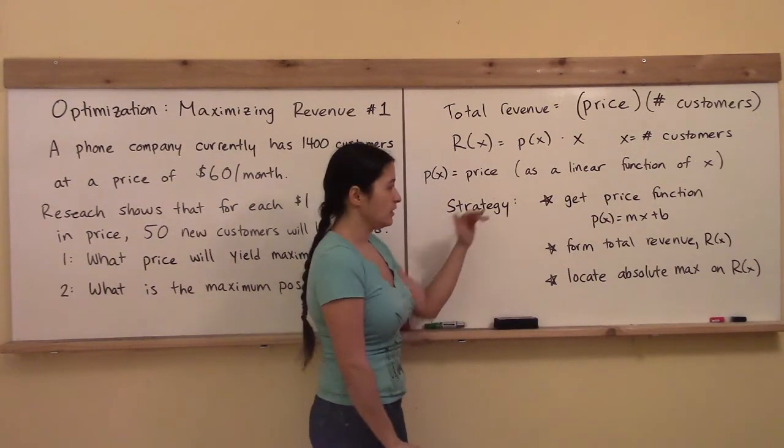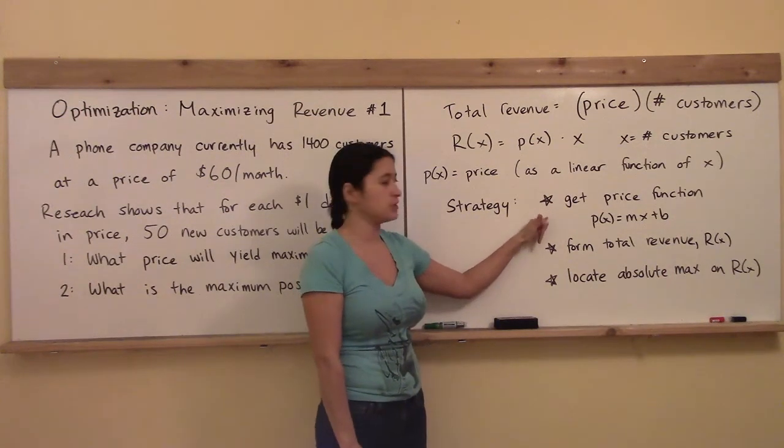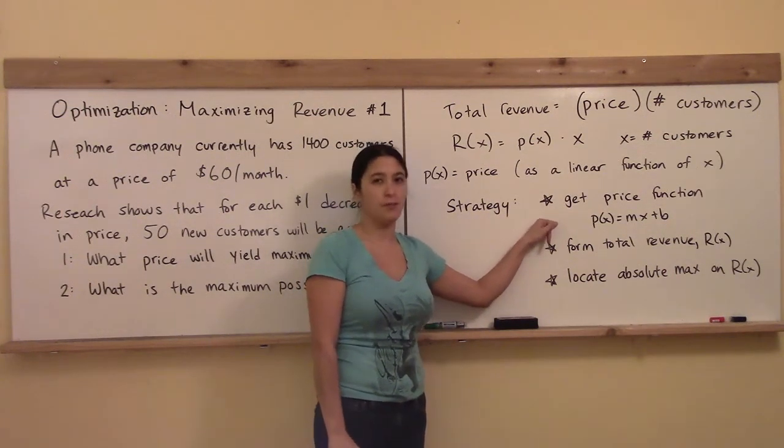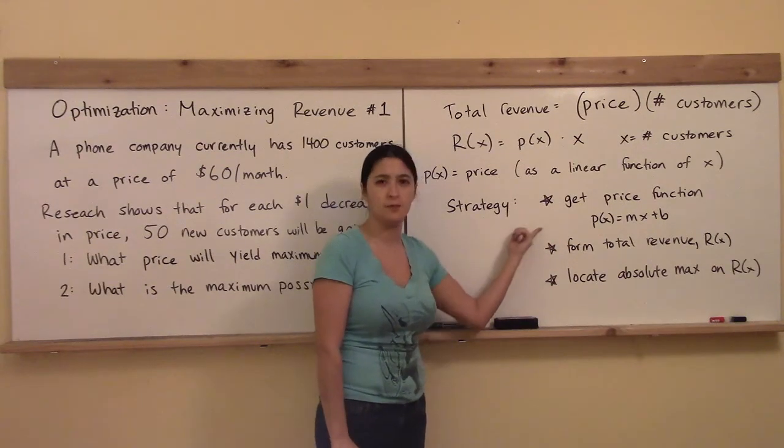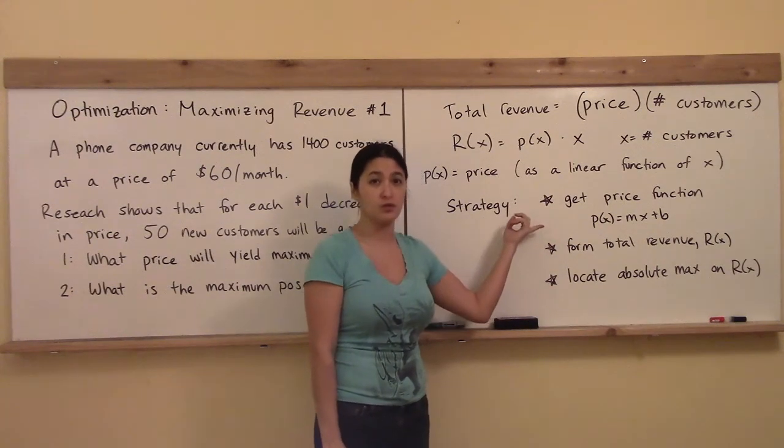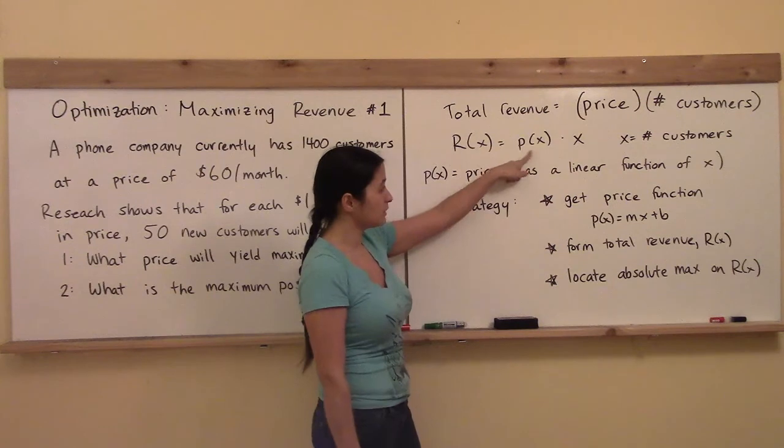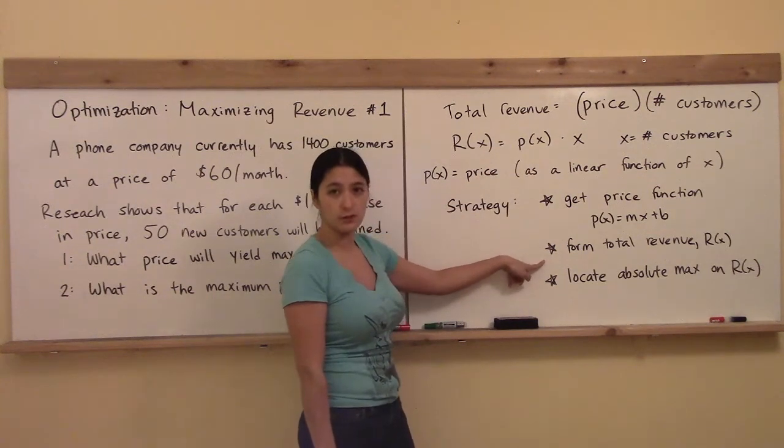So here's our strategy. First, we need to get that price function P(x) in the form P(x) equals mx plus b. We've got to find the m, we've got to find the b. Then once we have that, then we can plug it in right here, and then we're going to form the total revenue.